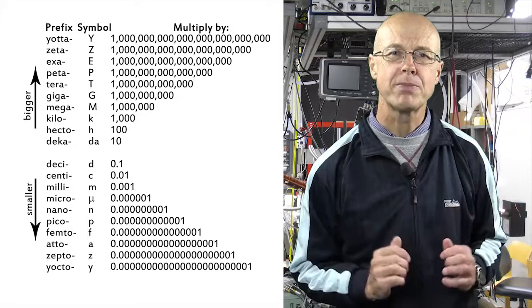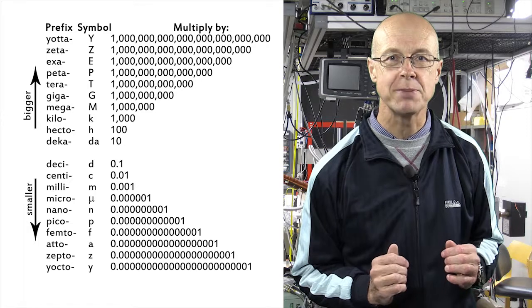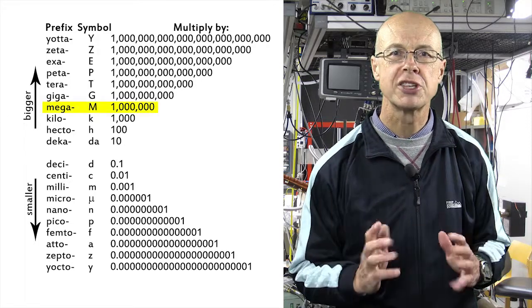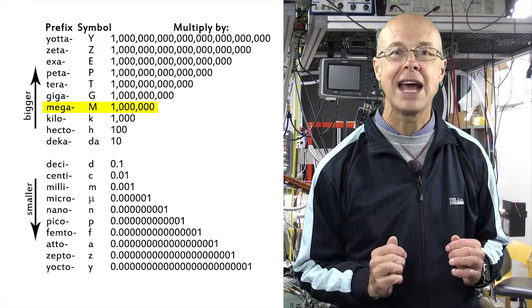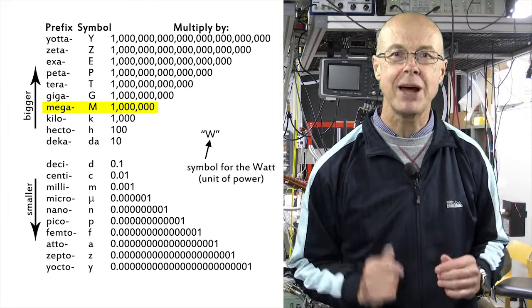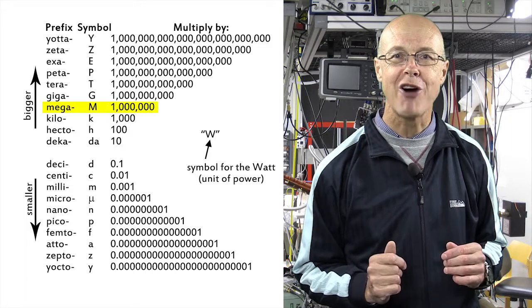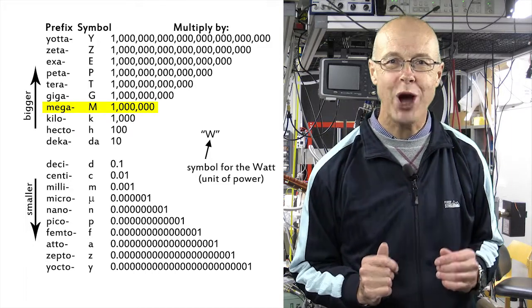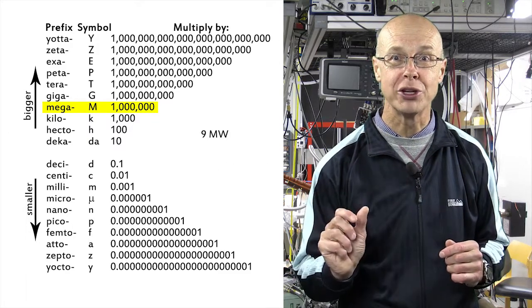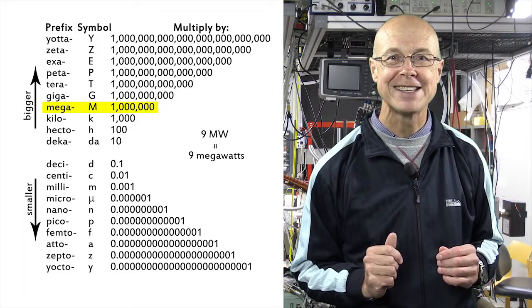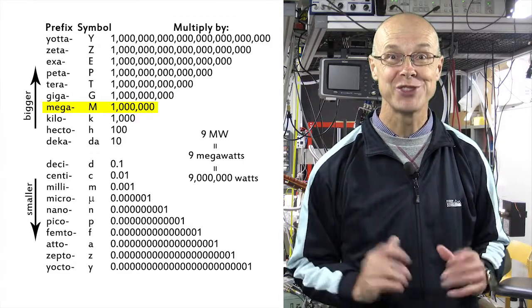Each metric prefix has a symbol that goes in front of the symbol for the basic unit of measurement being used. For example, mega, which we've already seen means million, has the symbol capital M. Capital W, on the other hand, is the symbol for the basic unit of power known as the watt. So when you see, for example, nine capital M capital W, you should read that as nine megawatts or nine million watts of power.